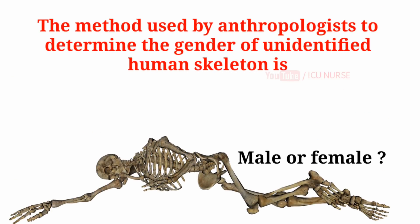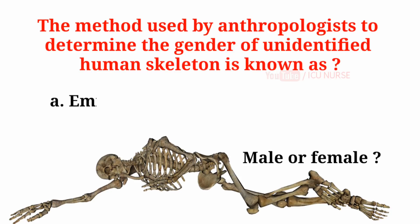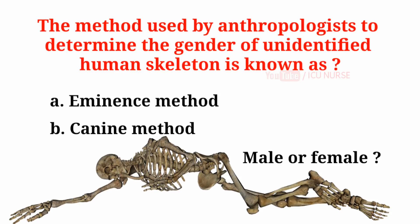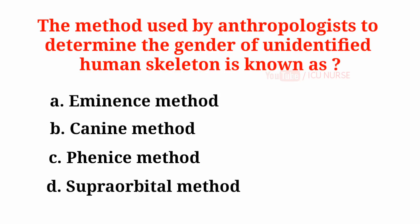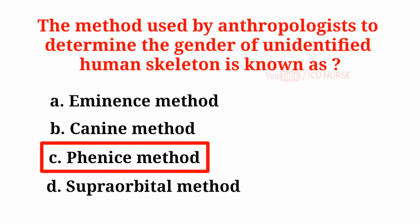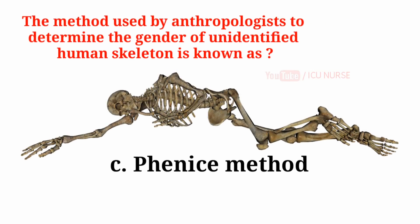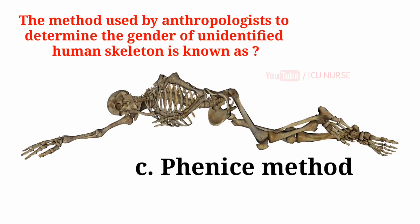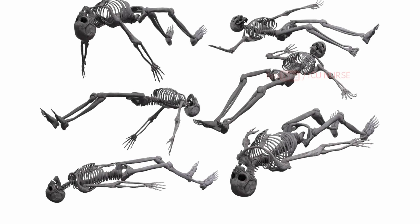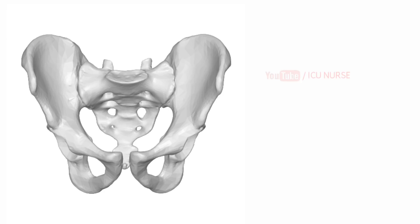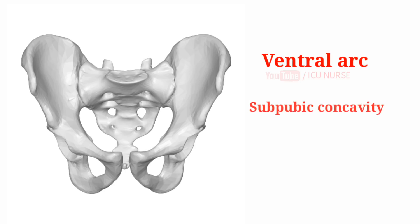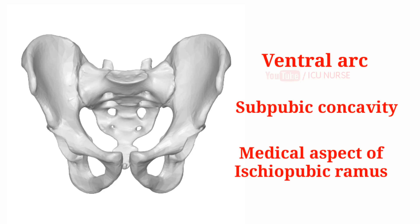The method used by anthropologists to determine the gender of unidentified human skeleton is known as: A. Eminence method, B. Canine method, C. Phenice method, D. Supraorbital method. And the answer is C. Phenice method. The Phenice method is a form of gross morphological analysis used to determine the sex of an unidentified human skeleton based on three characteristics of the pelvis: the ventral arc, sub-pubic concavity, and the medial aspect of the ischiopubic ramus.